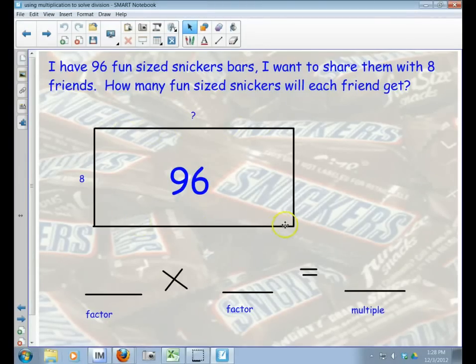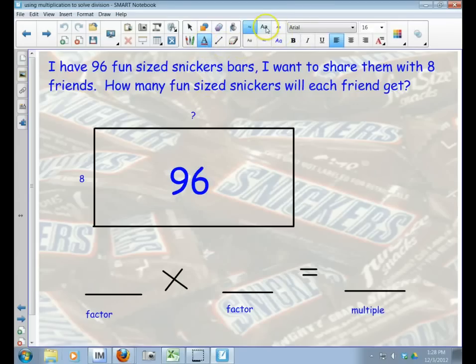I've got 96 total Snickers bars. I have 8 friends—that's one of the dimensions. My question is trying to figure out what's the other dimension for this array.